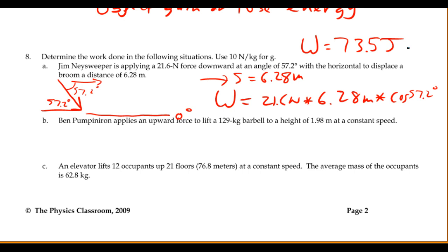Okay, in part B, Ben Pumpiniron applies an upward force to lift a 129-kilogram barbell to a height of 1.98 meters at a constant speed. So, draw a picture to make sure you know what's going on. He's lifting the barbell at constant speed. So his applied force will be equal to the force of gravity. That means it'll be equal to mg. He's going to lift at 1.98 meters. It's going to displace straight up.